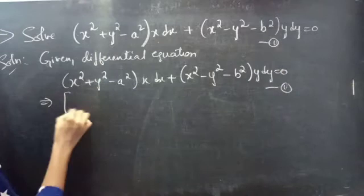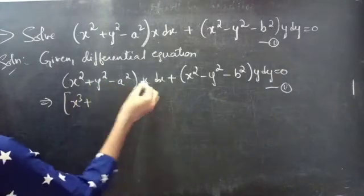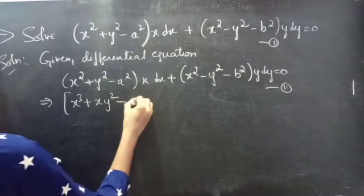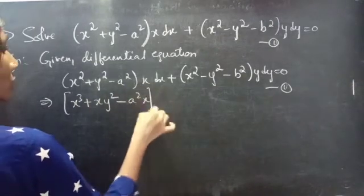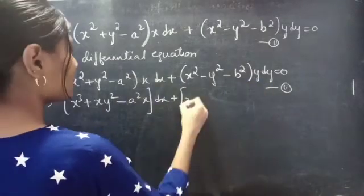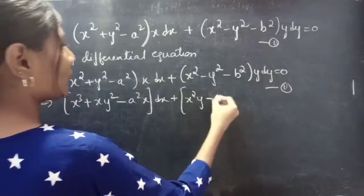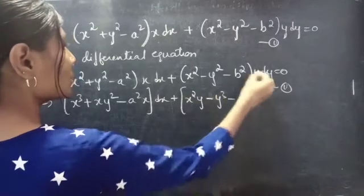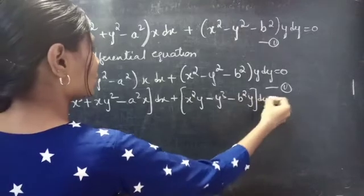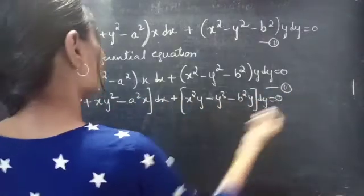We can rewrite it as: x³ + xy² - a²x into dx plus x²y - y³ - b²y into dy equals 0, which is of the form M dx + N dy = 0, equation (1).